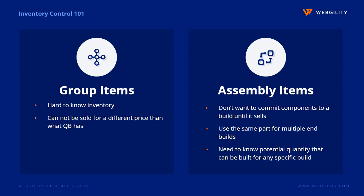Group and assembly items are another tricky component to work with when selling online. Group items, or bundled items, do not actually have an inventory account, and with QuickBooks they must be sold for the total price of the containing items. Assembly items have a quantity, but you have to commit the component parts to the final build. This makes having multiple assemblies which use the same component part hard to track.